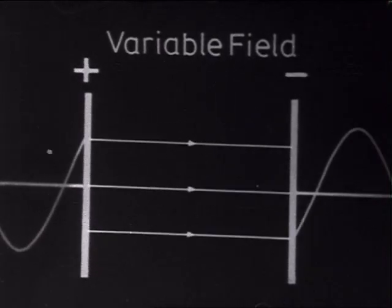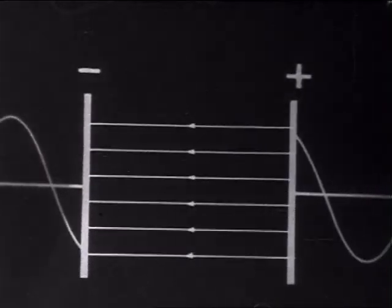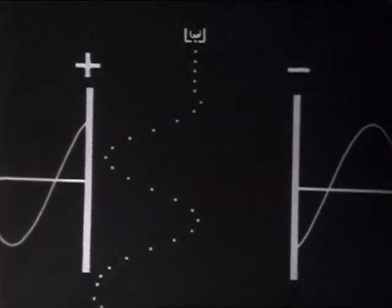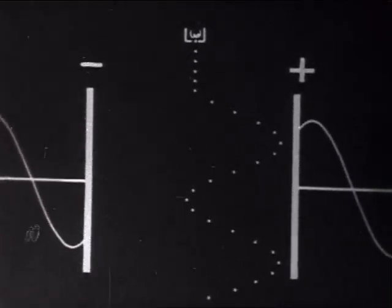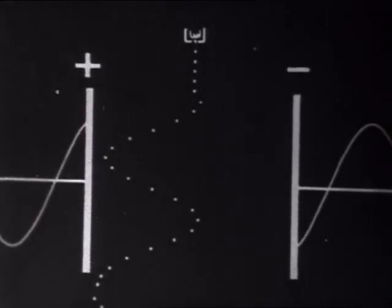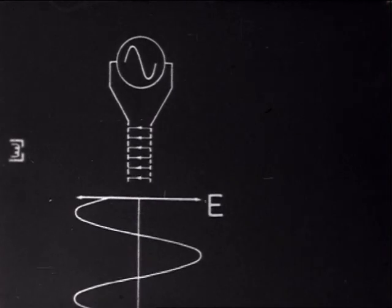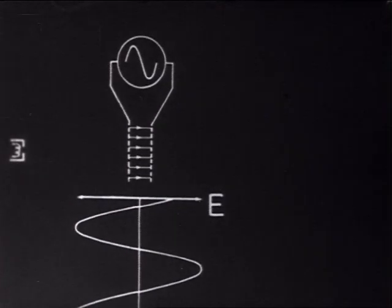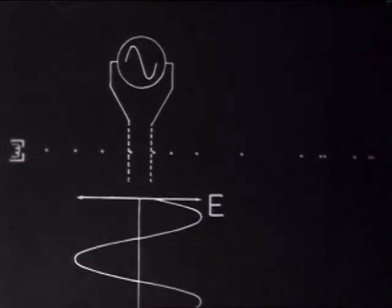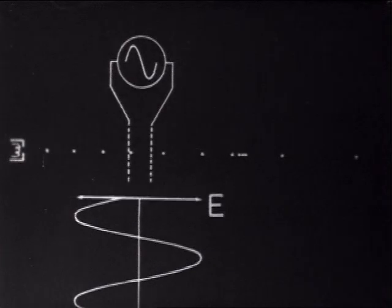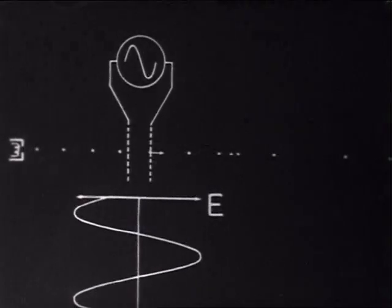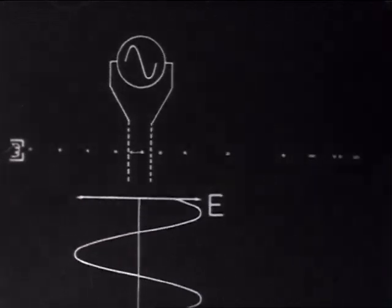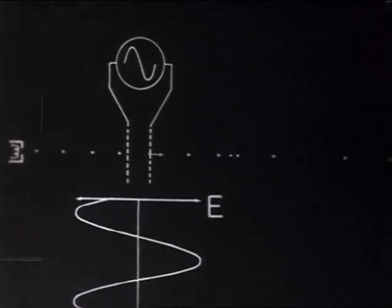A variable field is created by an alternating voltage between two plates. A space with a field variation sinusoidal in time gives the passing electrons an augmentation or diminution of velocity depending on when they pass through the field. The result is that the electrons of each period bunch around the electron that passes through the space when the field changes from a retarding into an accelerating phase.